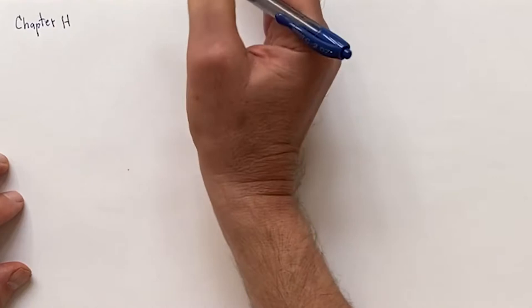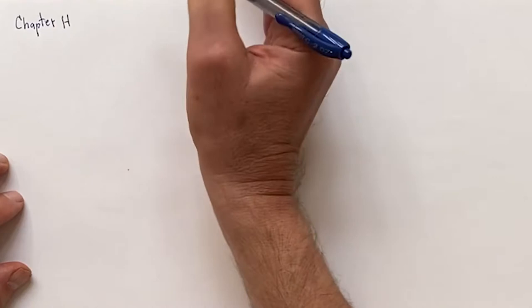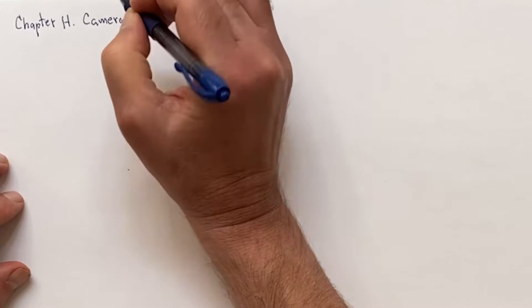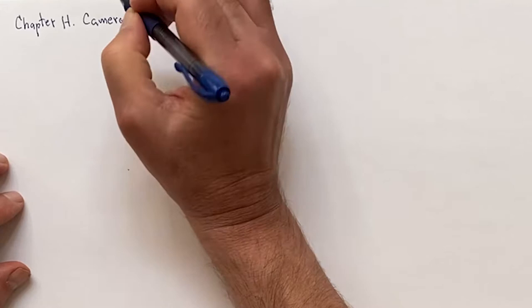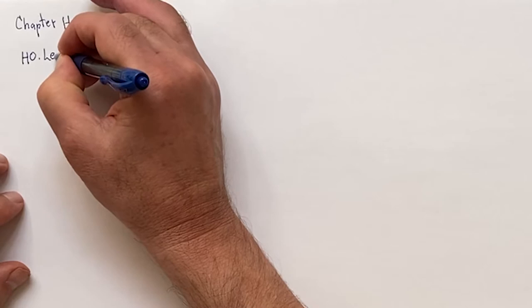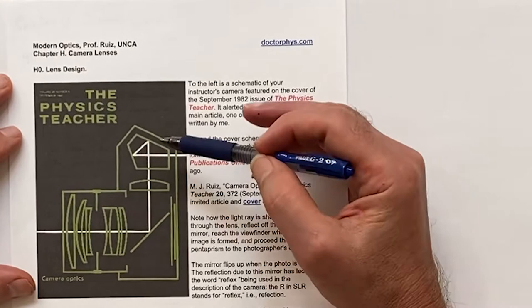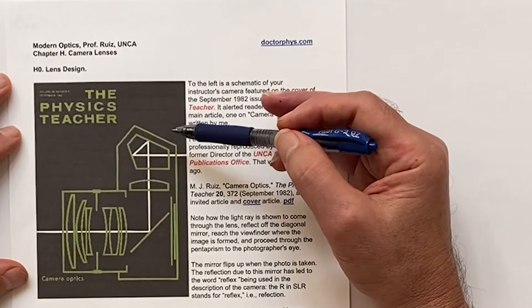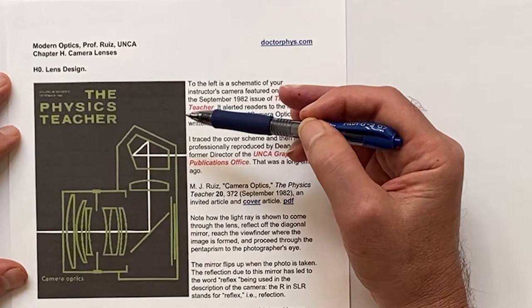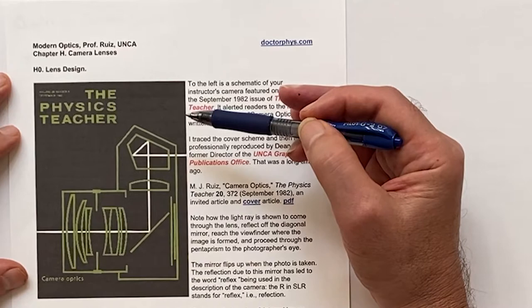Chapter H: Camera Lenses. The first section is lens general design. In our text, you'll find a cover of The Physics Teacher — this is a paper I wrote. The editor requested it. I went to New York and presented slides of the Biltmore house at different focal lengths. You really can't lose with the Biltmore house; it just sells physics and application.